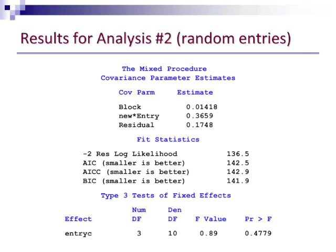So here's the results for the second analysis there. You see we have the estimates of our variance components at the top for blocks, the new entries, and then the residuals, and that there is a reasonable variance among our new entries.